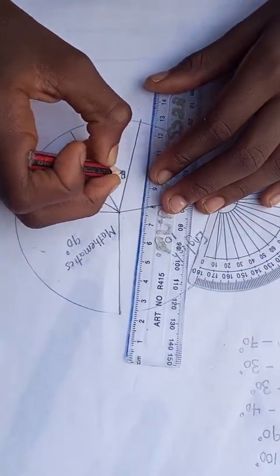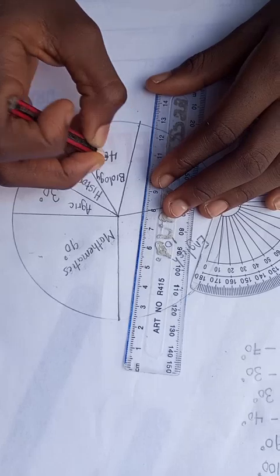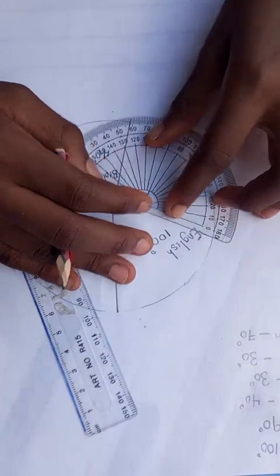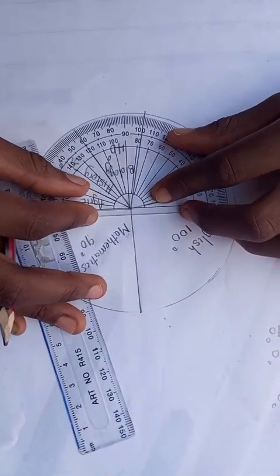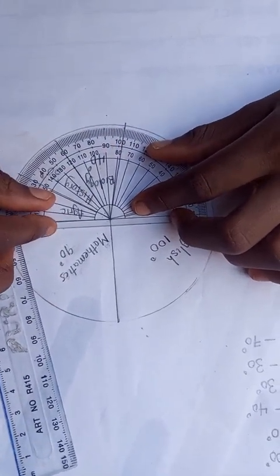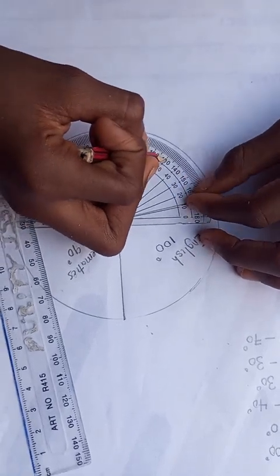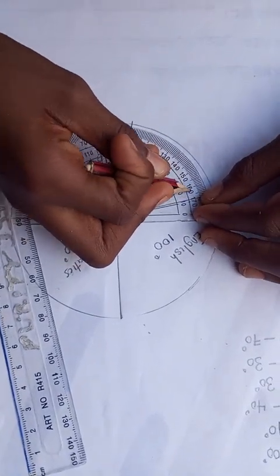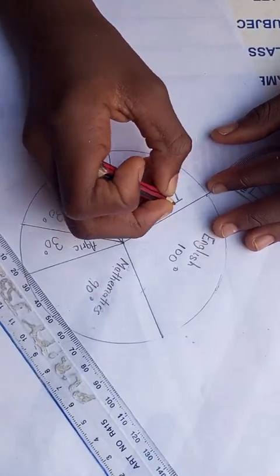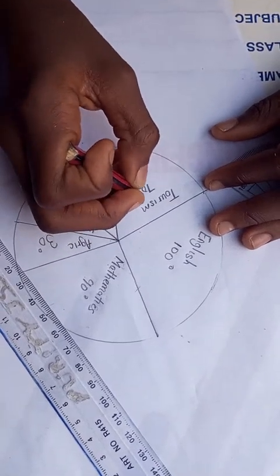This is biology which is 40. Let's see the last angle which is tourism, which is 70 degrees. It should be straight. So this is 10, 20, 30, 40, 50, 60, 70. Exactly. So tourism is 70 degrees.